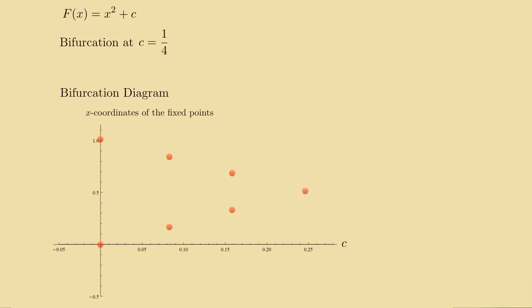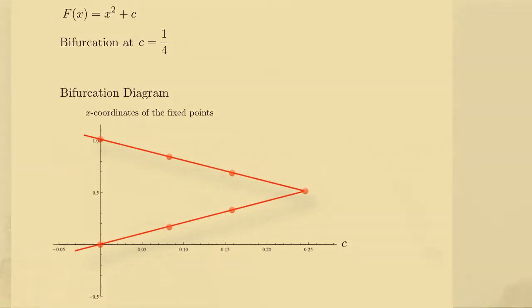So, if we imagine connecting the dots here of all the points, the x-coordinates of all the fixed points, as a function of the parameter c, we get a curve that looks like this. And this is called the bifurcation diagram.